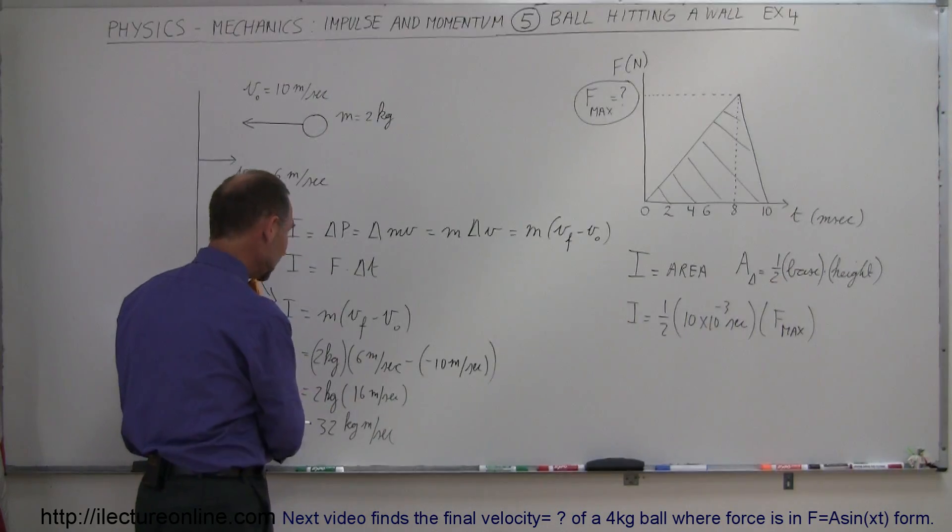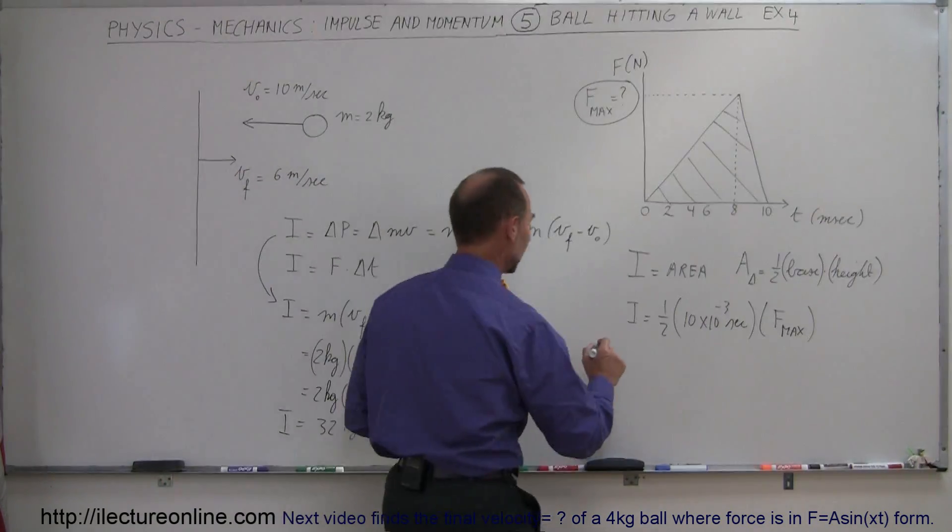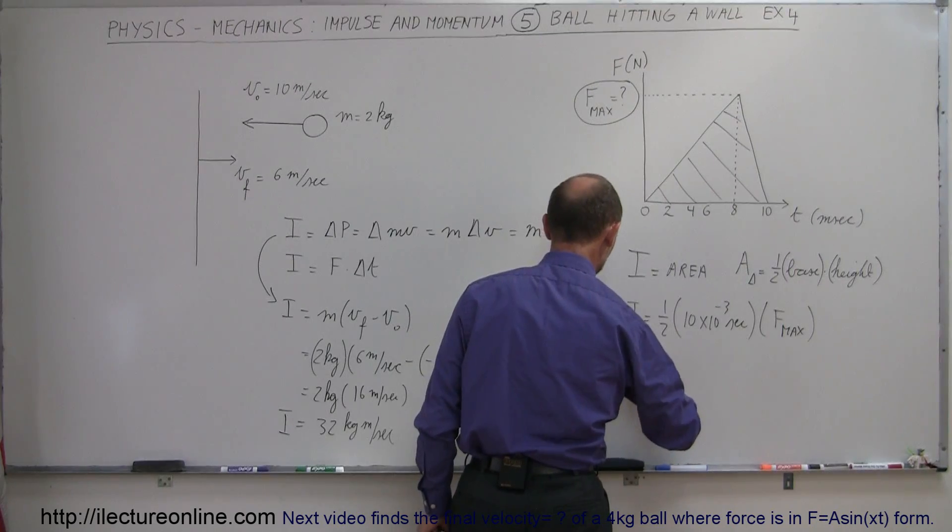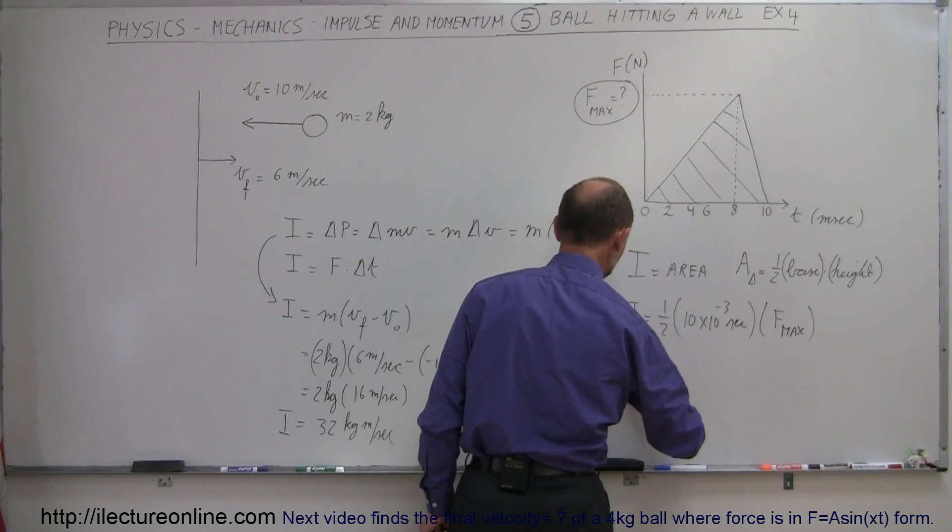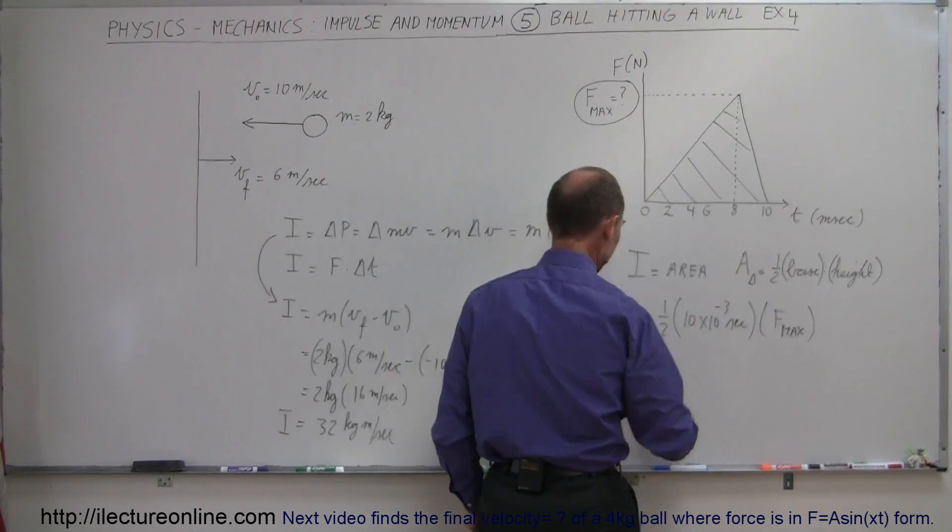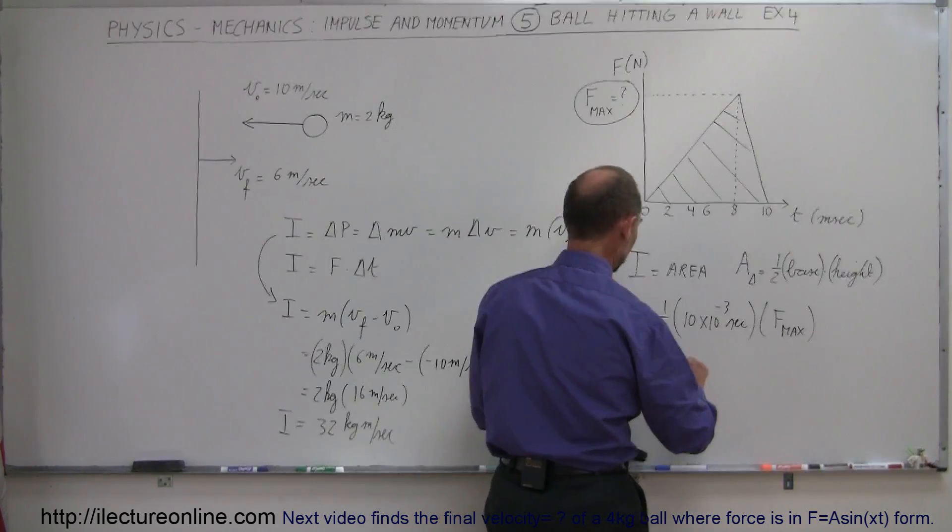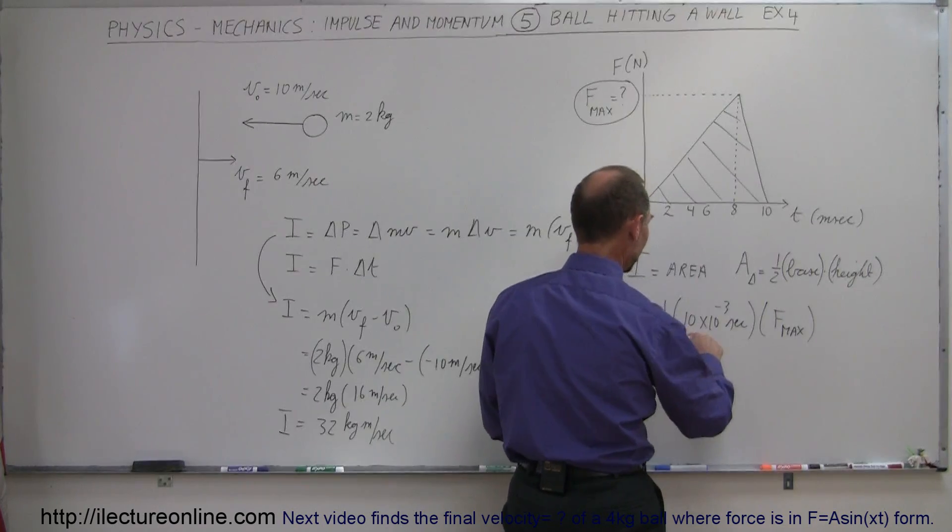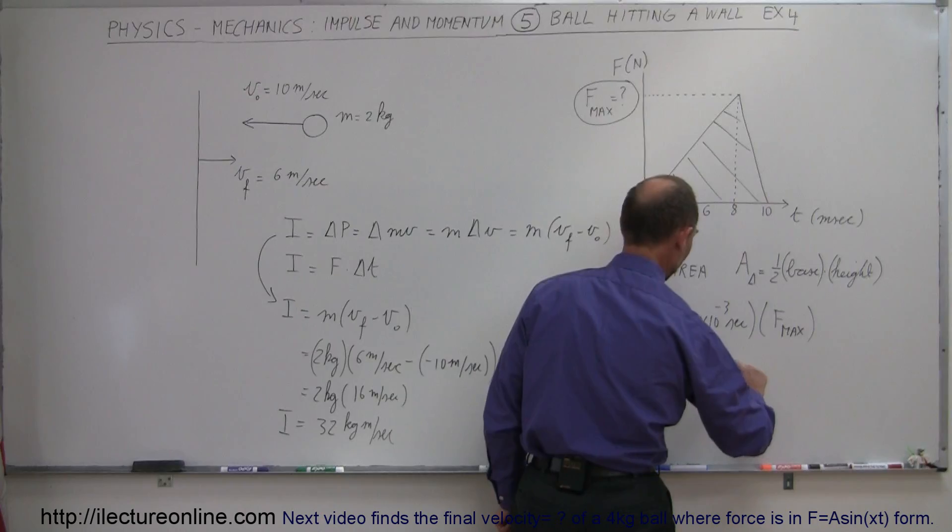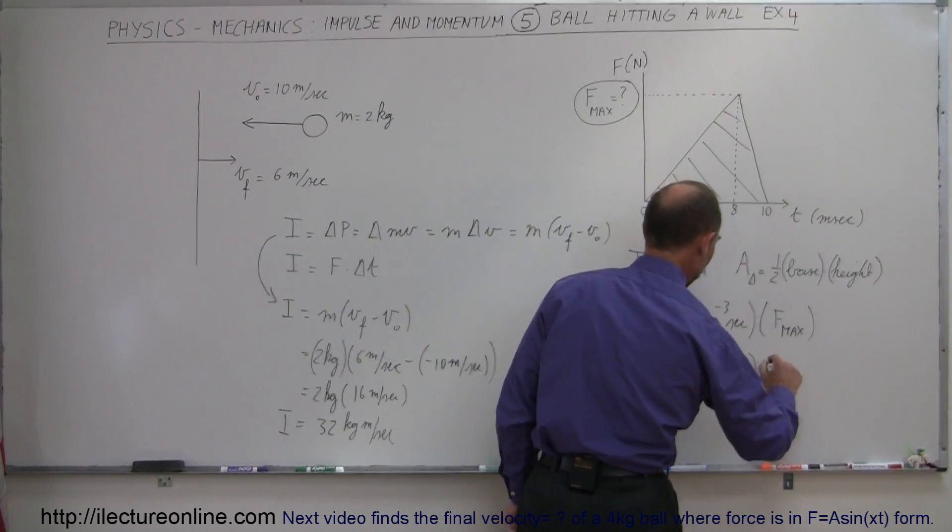All right, if we now set that equal to the impulse that we have over there, we can then say that instead of I, we write 32 kilogram meters per second. That should equal one half times this, which would be 5 times 10 to the minus 3 seconds, times F max.